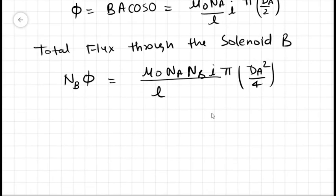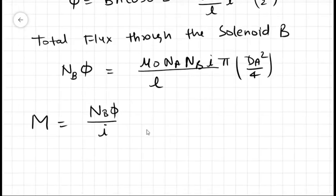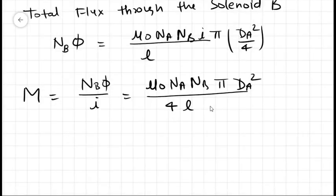So the mutual inductance will be NBΦ over I. So I and I will cancel out, and we will get μ₀NANB π DA² by 4L. So let me put all the values.